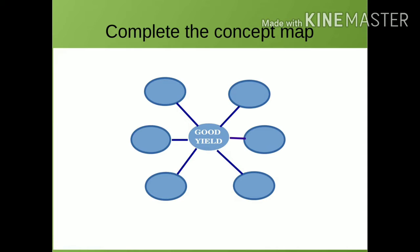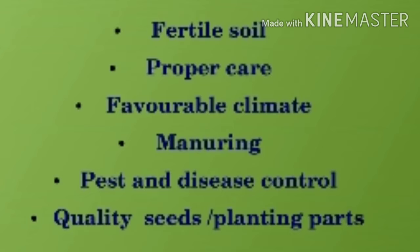So please complete the concept map. With proper caring alone, we cannot get a good yield. So what are the things you can do? Fertile soil, proper care, favorable climate, manuring, pest and disease control, quality seeds and planting parts. Okay?